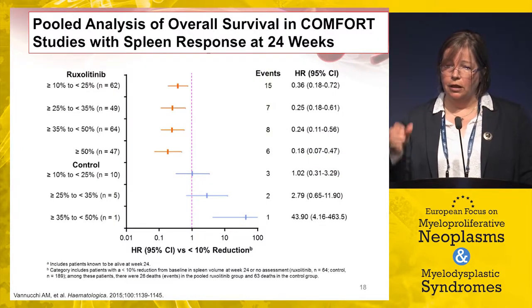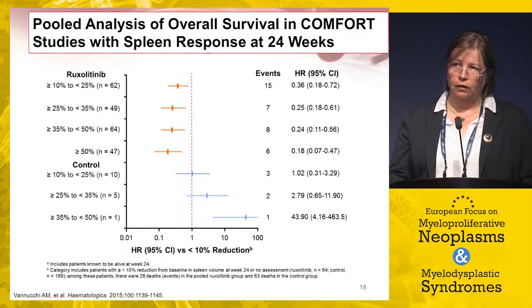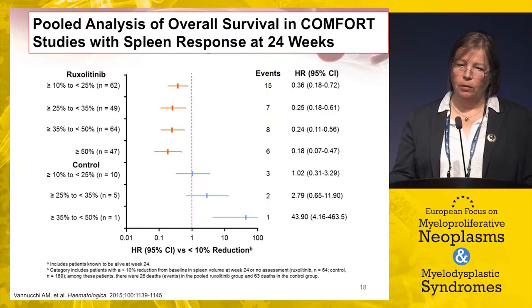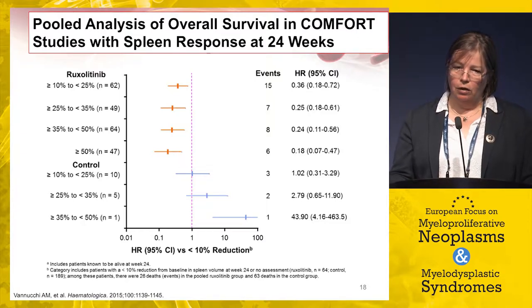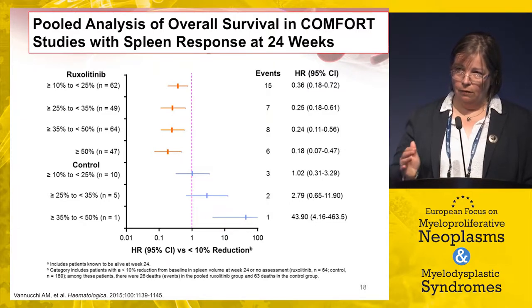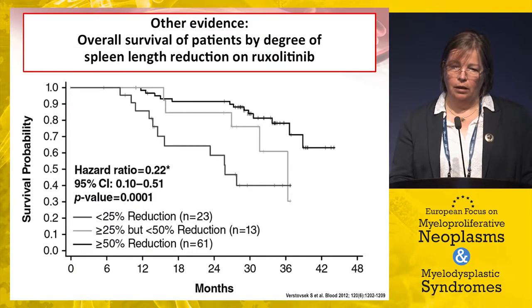How do I know a patient will likely have a survival advantage, and when do I think about stopping or modifying the dose? Patients who have a spleen response to ruxolitinib within the first 24 weeks are likely to have a survival advantage — with a hint that greater spleen response correlates with better survival. In my practice I try to achieve the best possible spleen reduction for my patient.